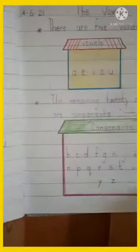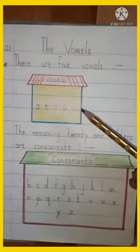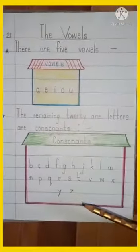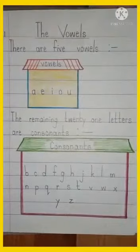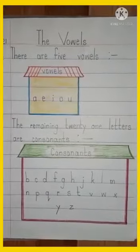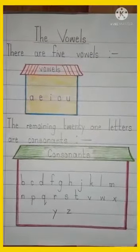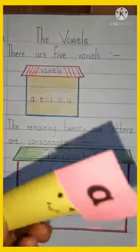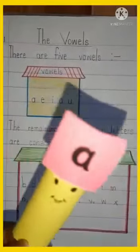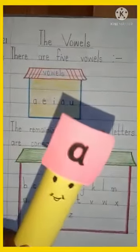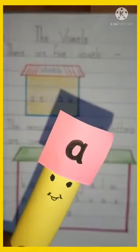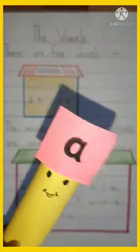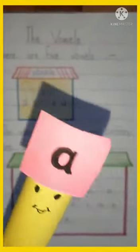And today you also have to draw the house of vowels and the house of consonants. And you try to make a finger puppet like this with the help of your mother and father. Then sing the vowel rhyme and you can also play with them.